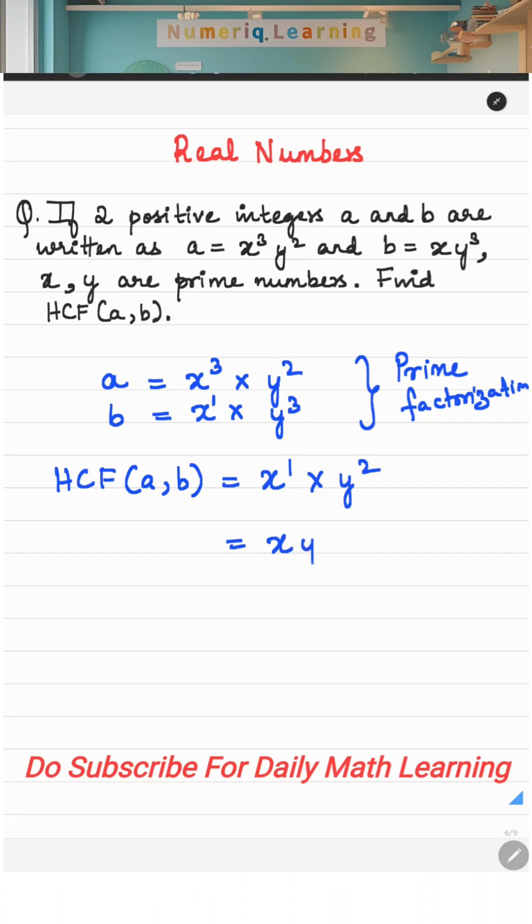So the HCF of a and b is x into y square. Always remember, whenever you are asked to find HCF, take the lowest power of the common factor.